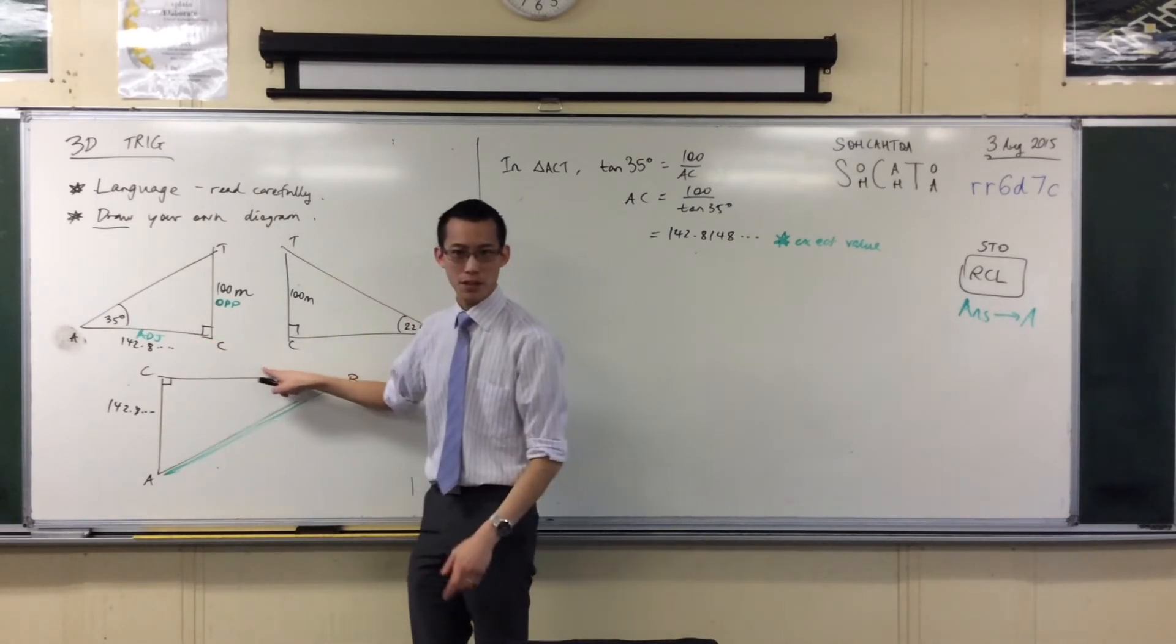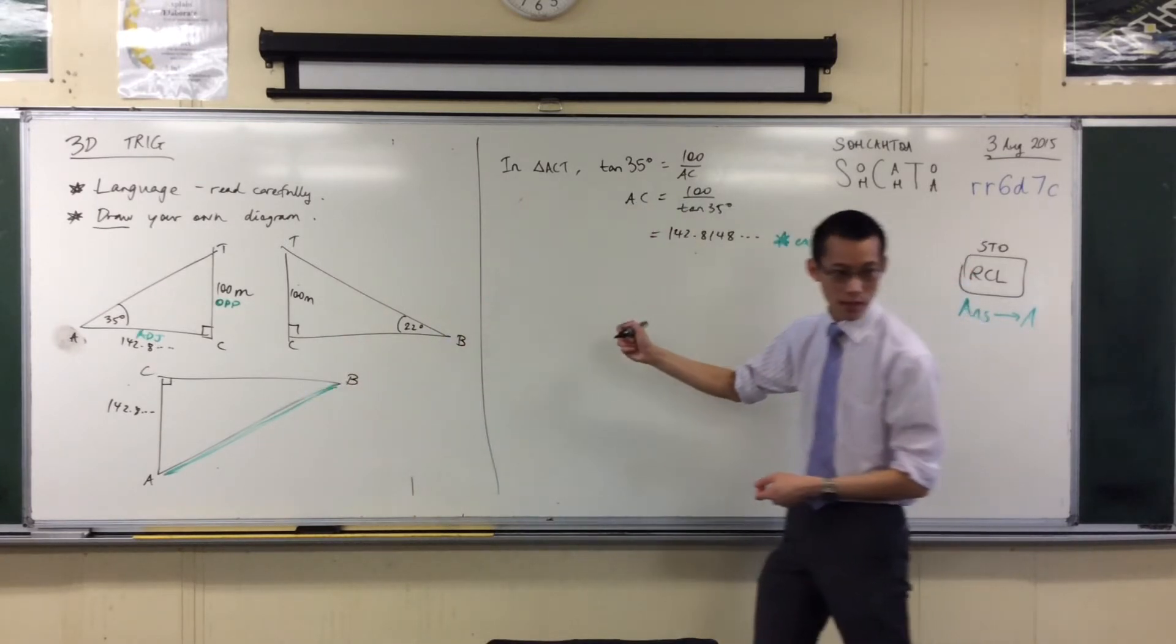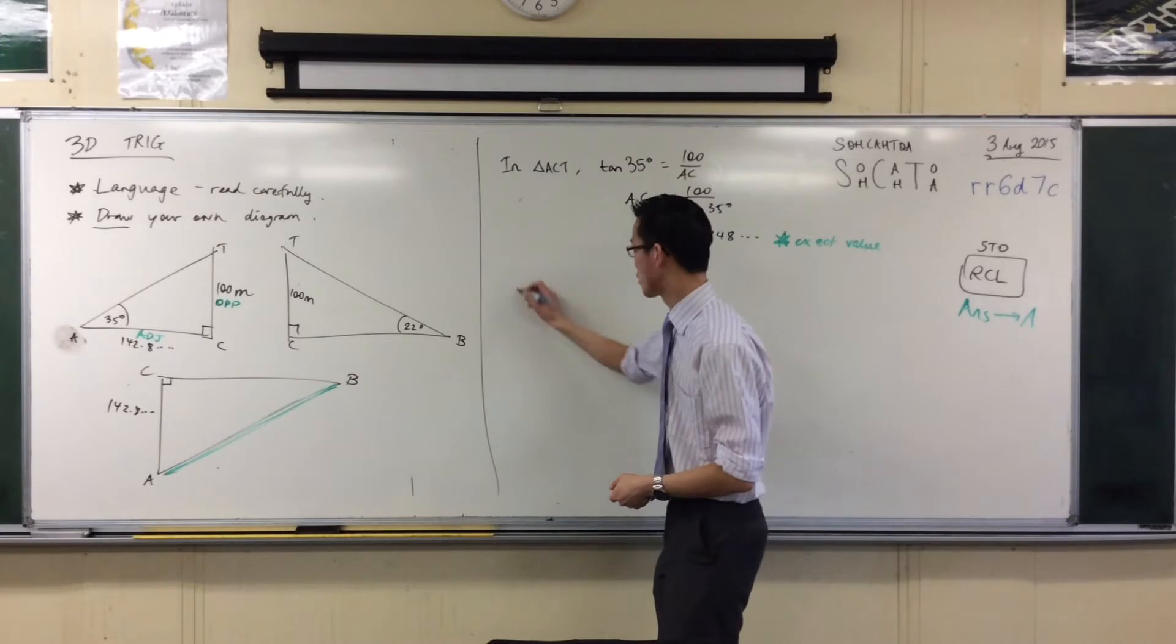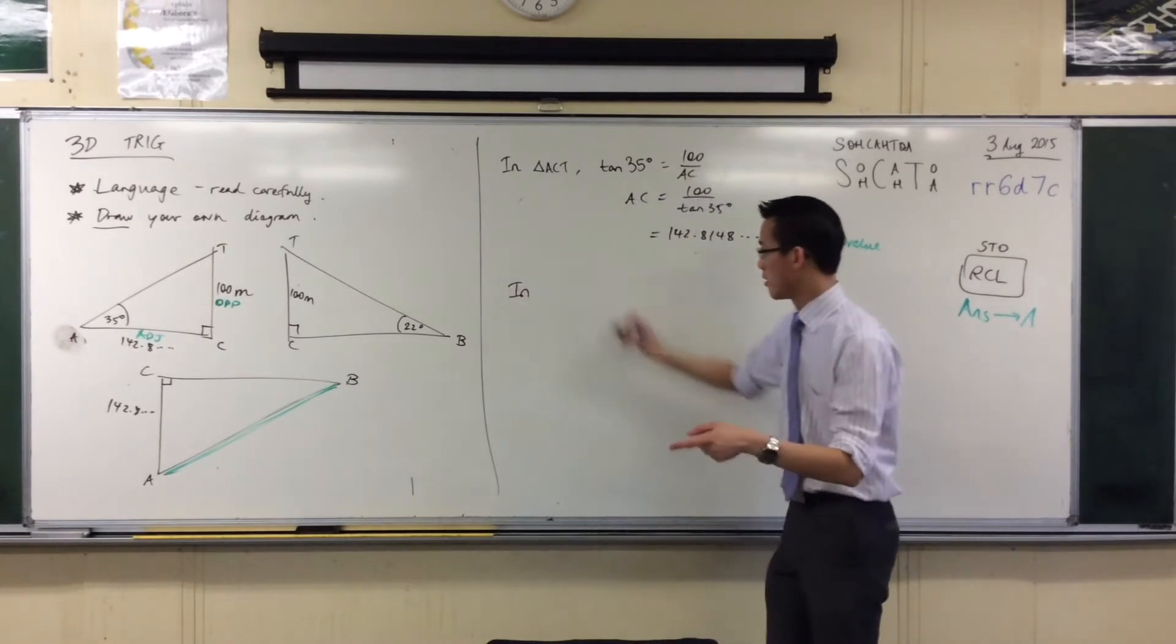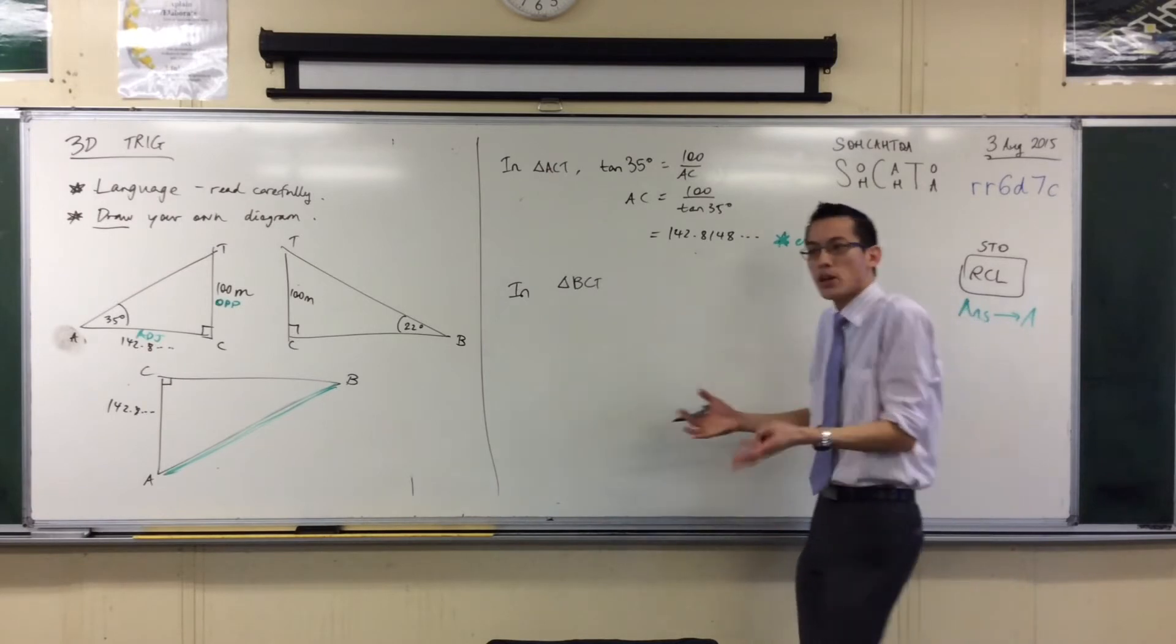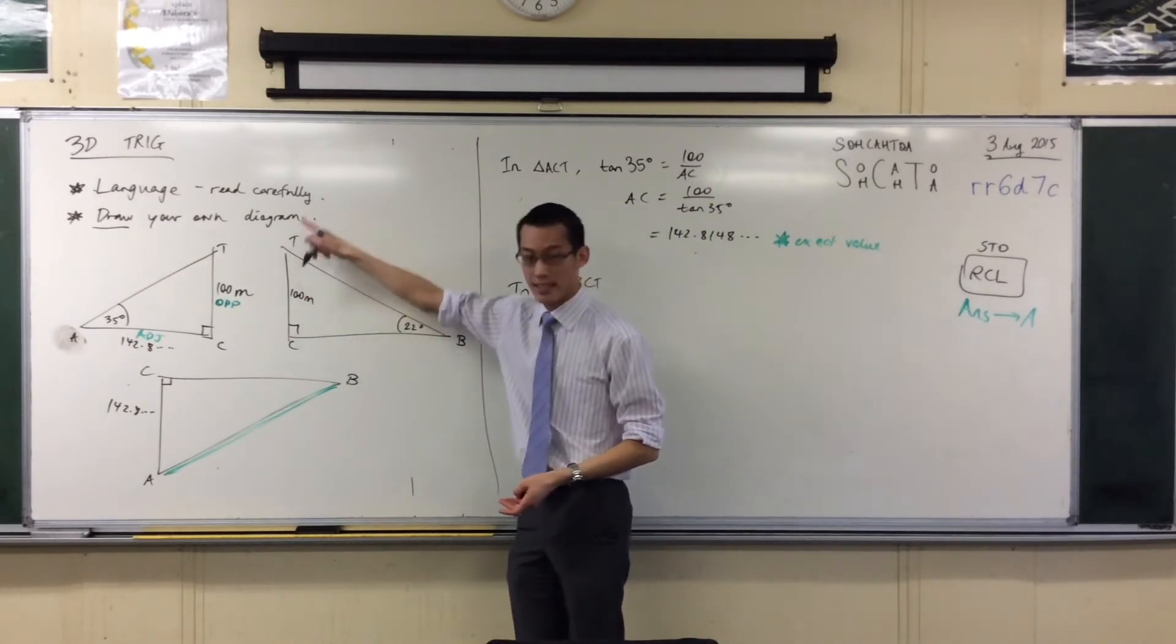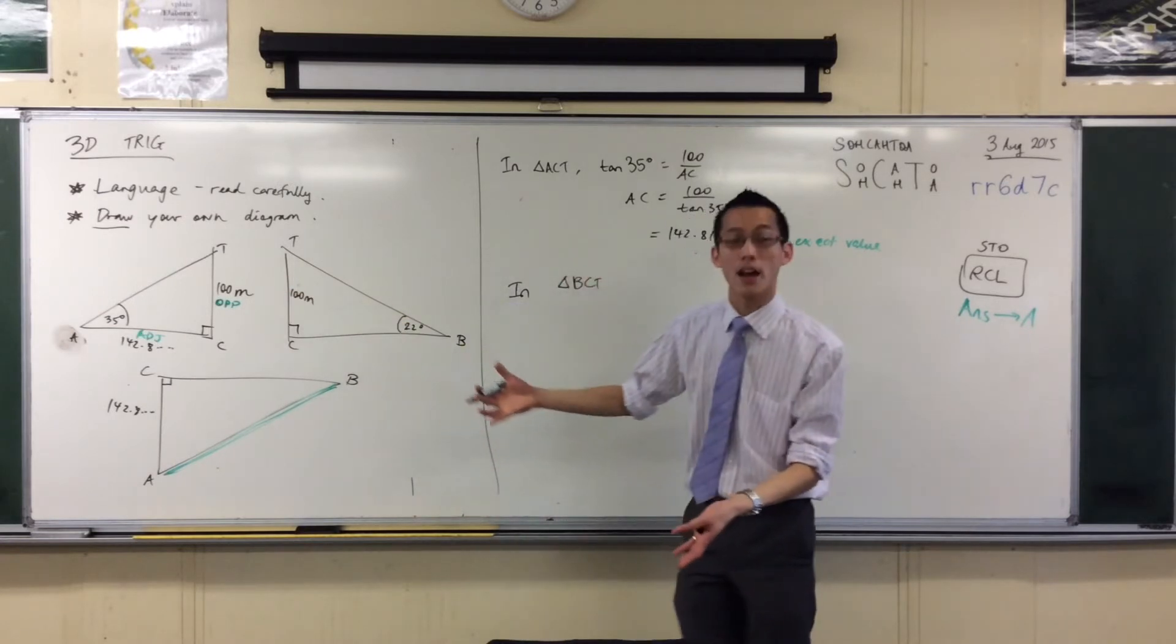All I need to do is this—that's all that's left. The process is exactly the same here. Talk me through it: what do I start writing? I'll give you a clue—it starts with 'in triangle BCT.' Very good! I'm naming my triangle. My setup is exactly the same: I have an angle of elevation and that same distance, 100 meters.